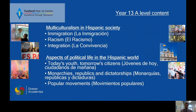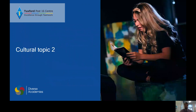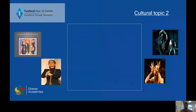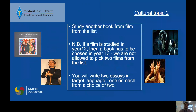You will also be discussing a second cultural topic for your other writing, so you'll study another book or film from the list. If a film is studied in year 12, then a book has to be chosen in year 13 — we are not allowed to pick two films. You will write two essays in the target language, one on each topic from a choice of two, 300 words each.